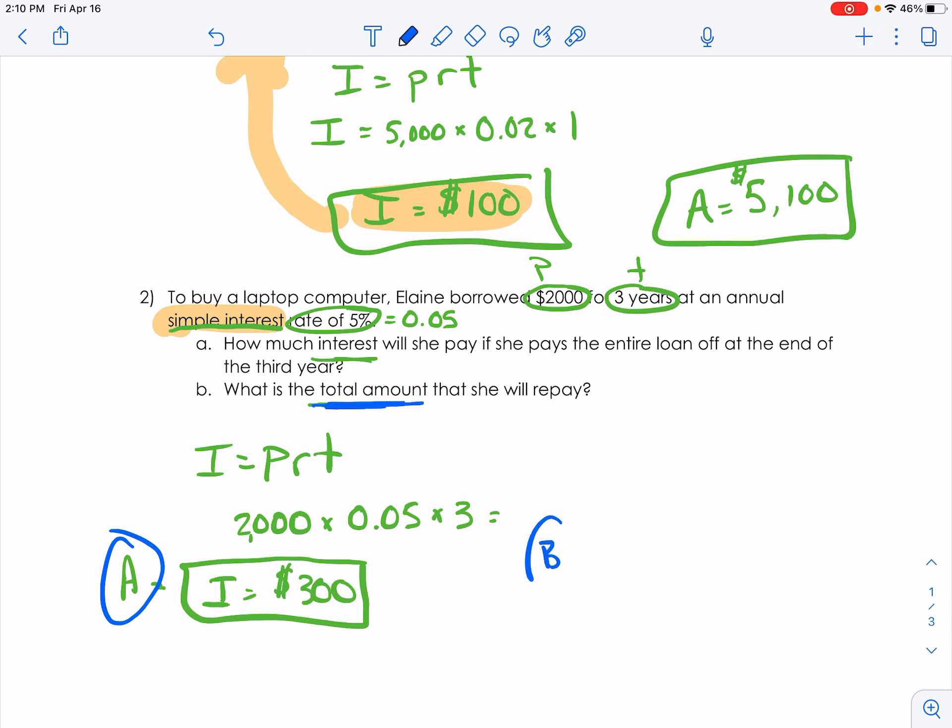So for Part B, we borrowed $2,000 that we have to pay them, plus the interest of $300.